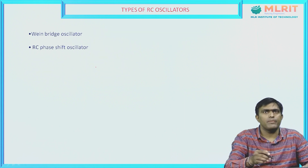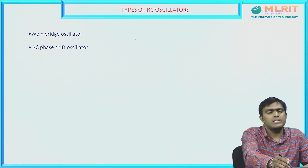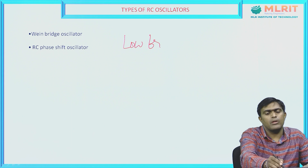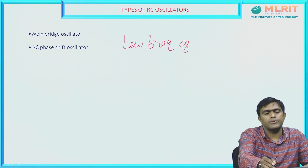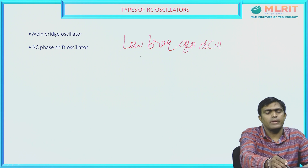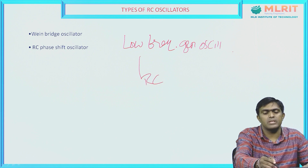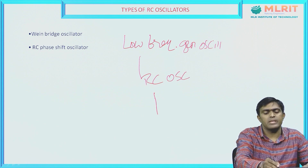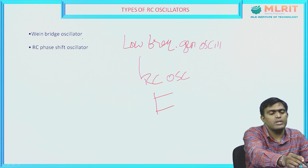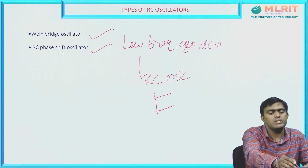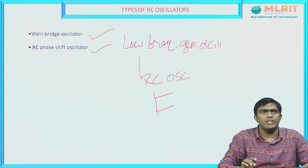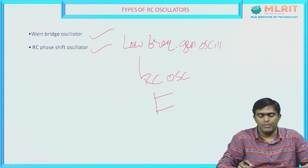Coming to the types of RC oscillator, RC oscillators mainly belong to low frequency generator oscillators. Under this category, RC oscillators are divided into two types: one is the Wien bridge oscillator and the next one is the RC phase shift oscillator. In this video, we will discuss about the Wien bridge oscillator.